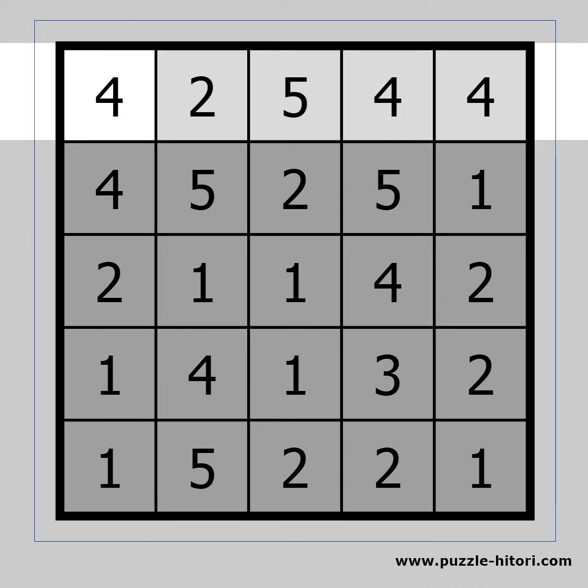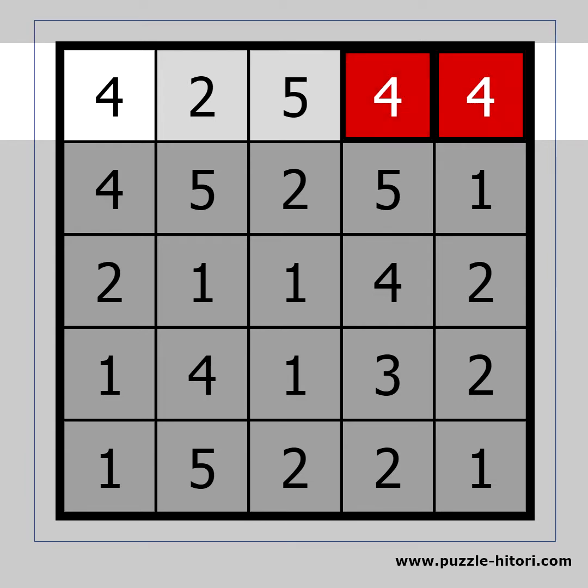If the first four was white, the rest of the fours on that row must be black. But then we will have two black cells next to each other, which contradicts the rules. This means that the first four must be black.